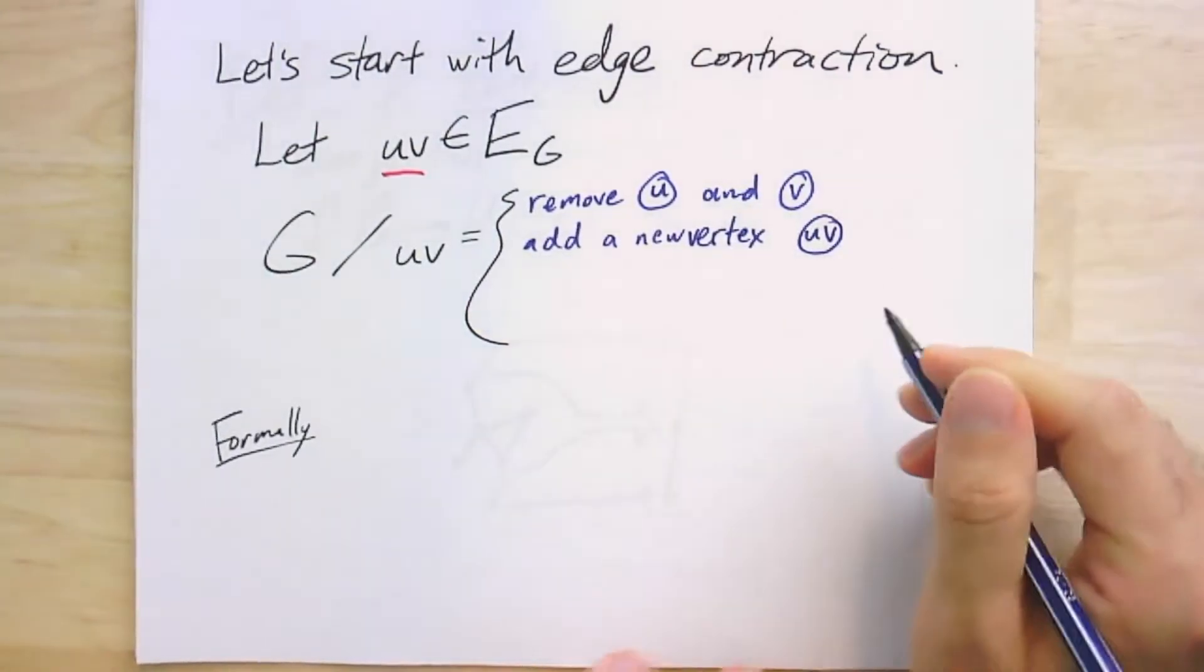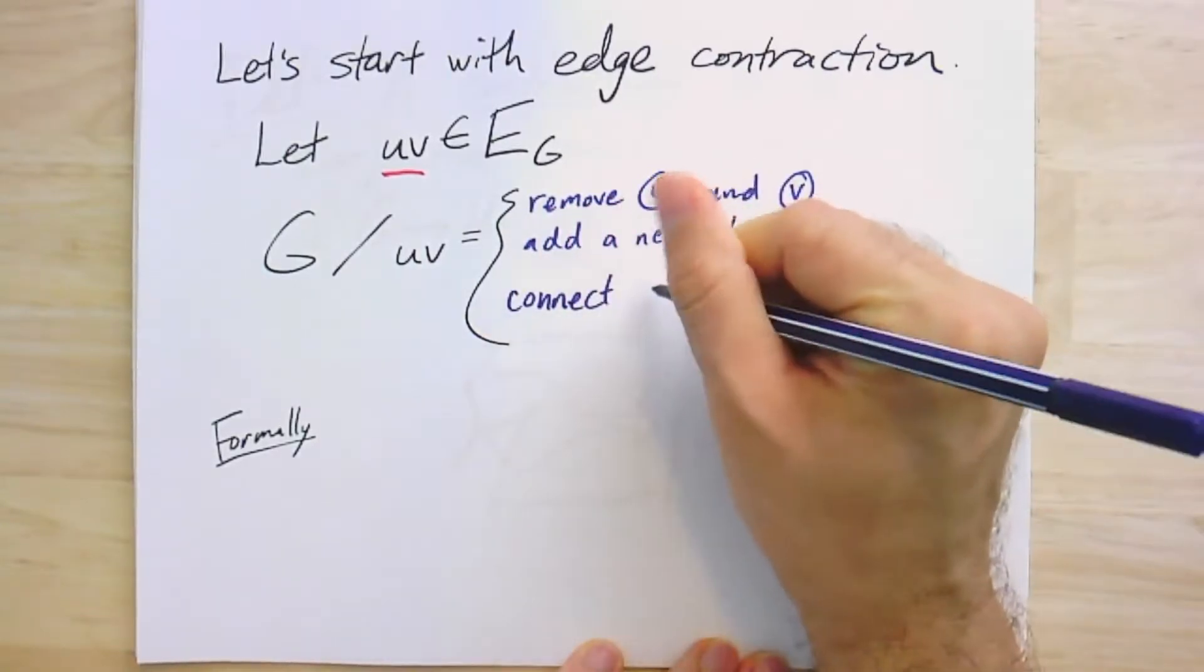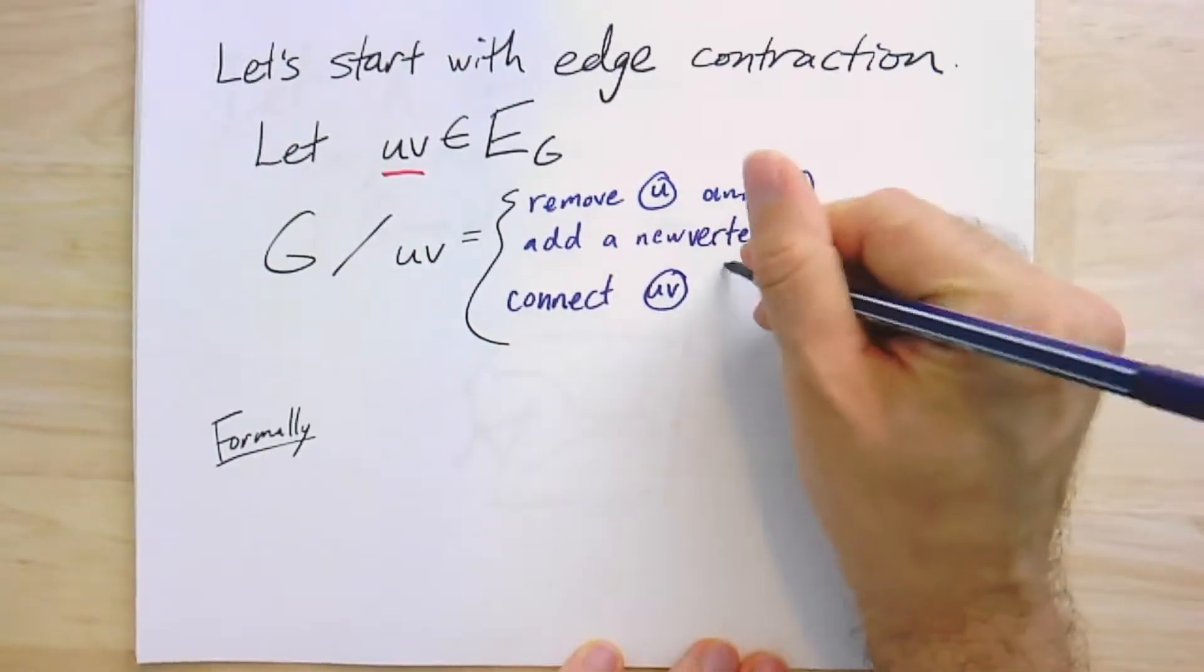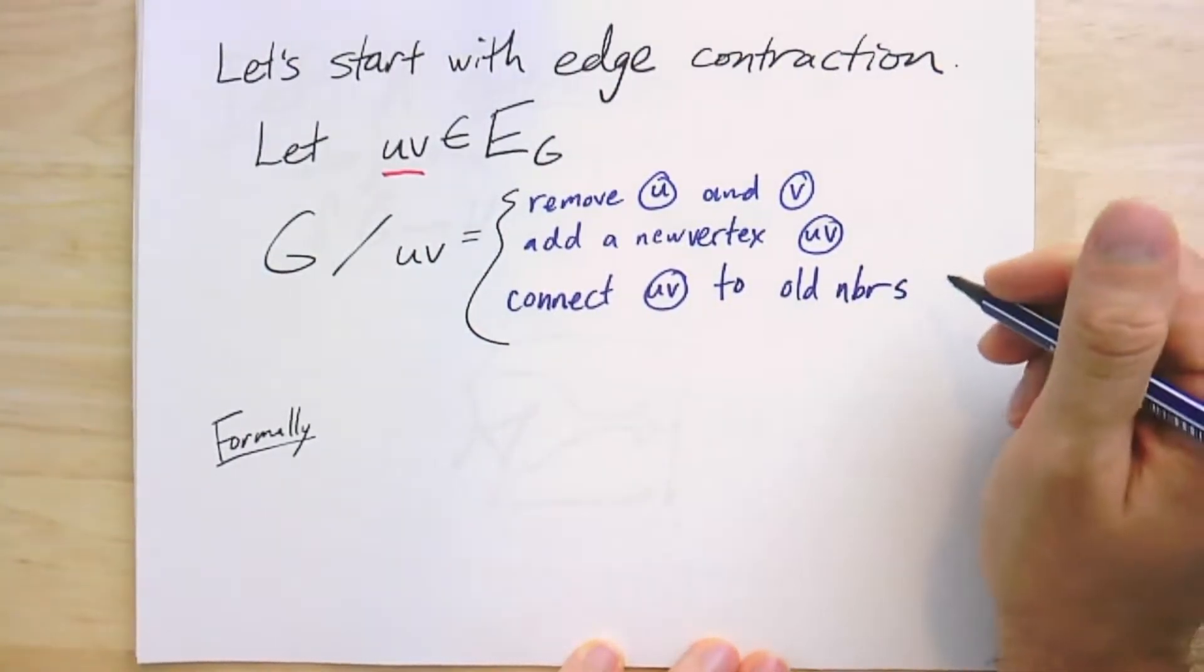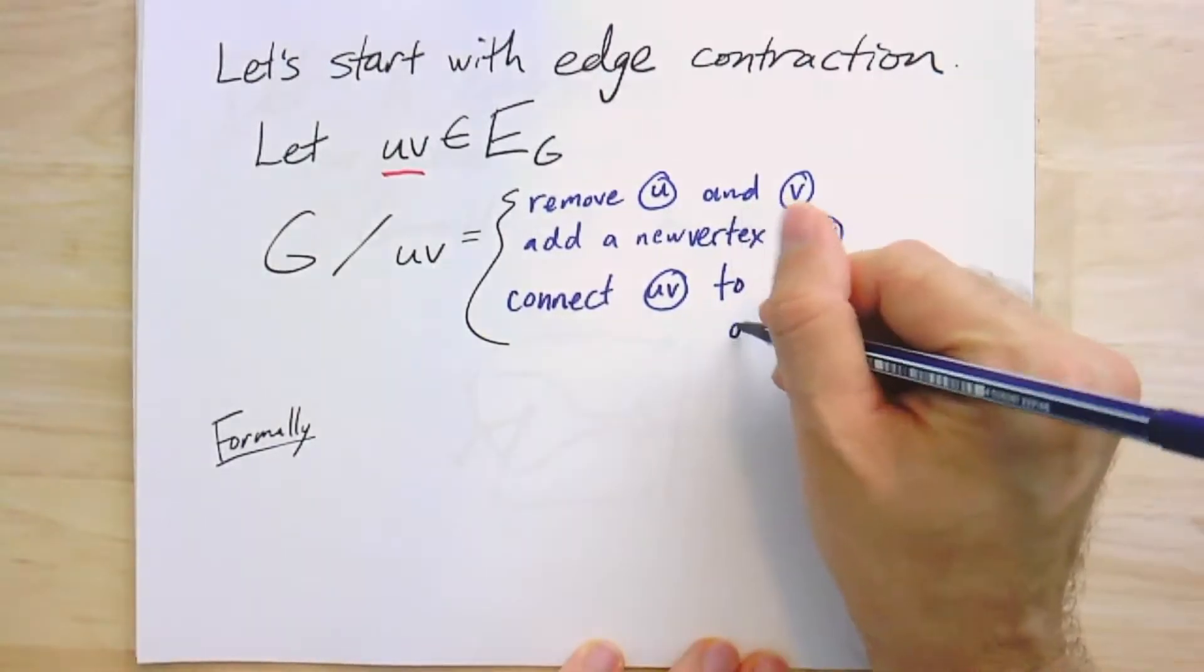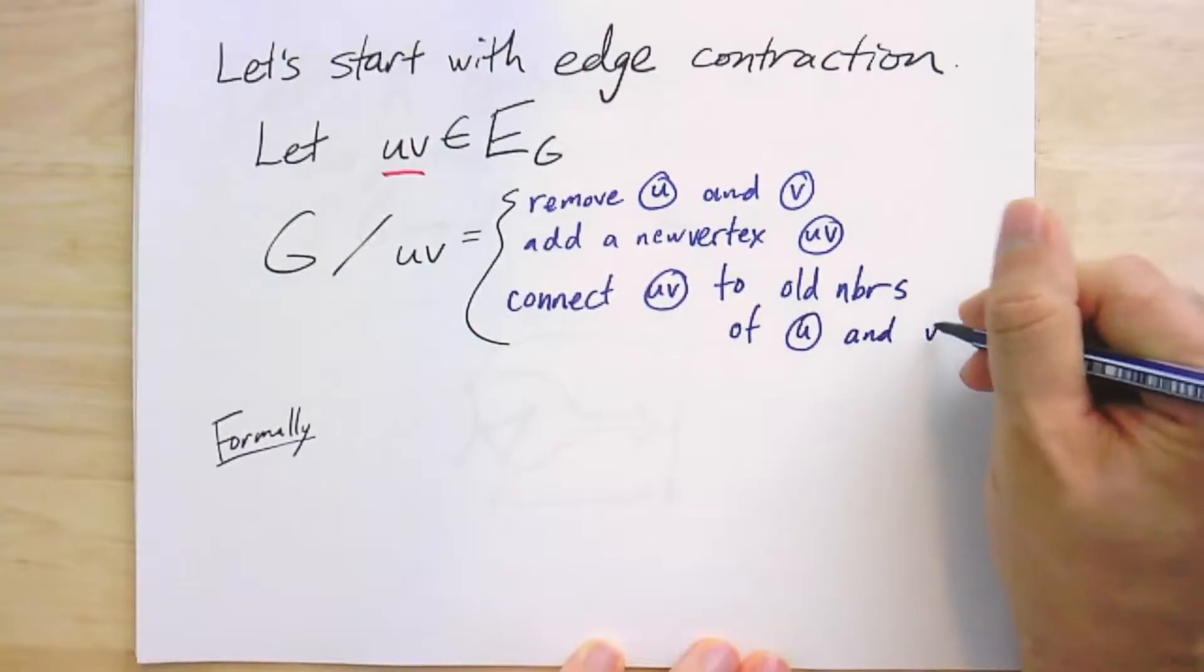Let's call it UV with a circle around it. And then we connect this new vertex UV to the old neighbors, whoever was adjacent to U or V, or both.